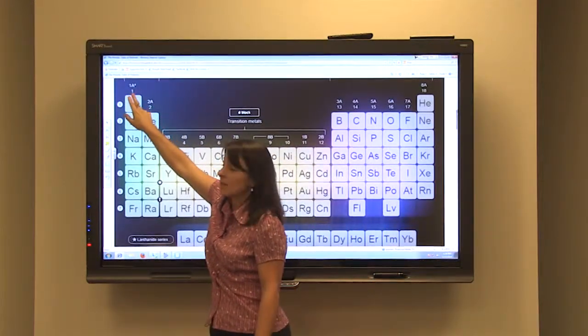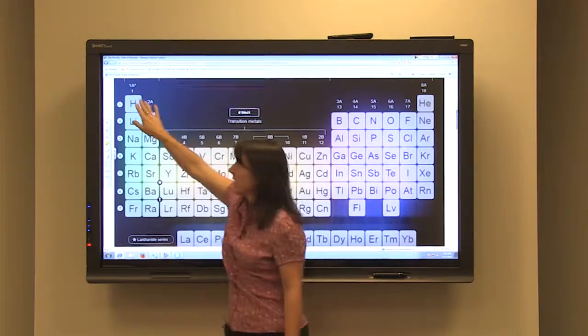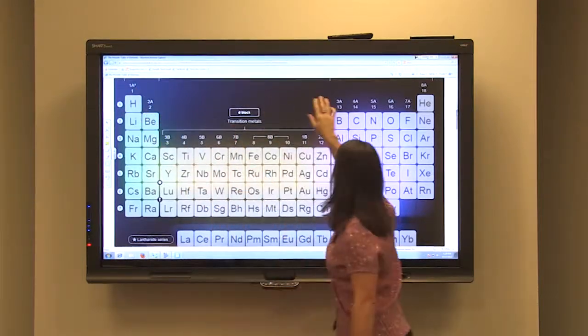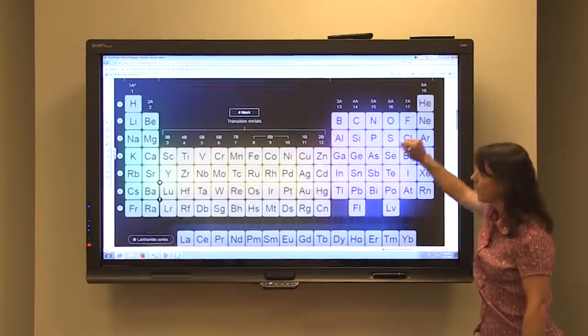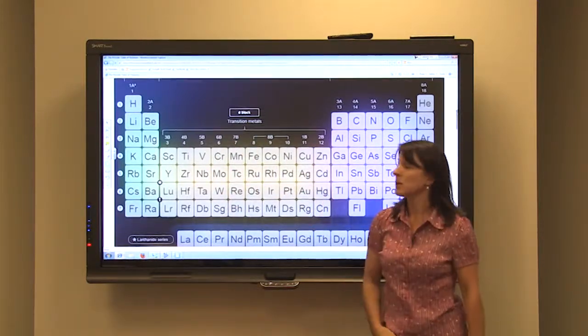Group numbers are designated either with just numbers as in 1 through 18, or we have a lettering system as well. So we have 1A, 2A, 3A through 8A, and then in the middle here we have our B elements, which are transition metals.